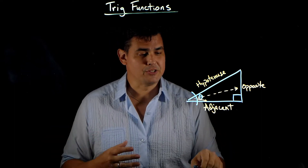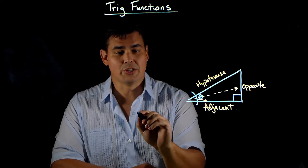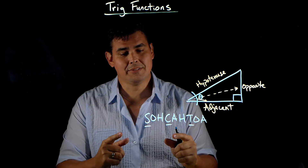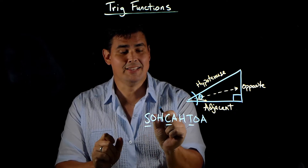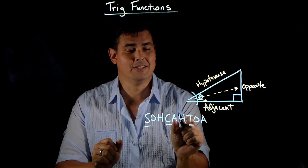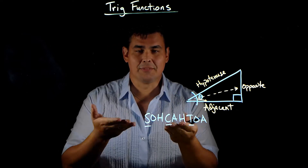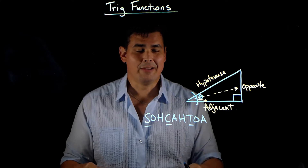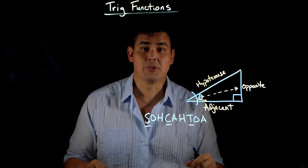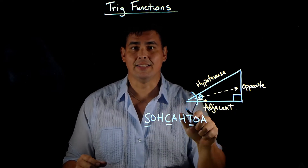The mnemonic to remember the trig functions is SOHCAHTOA. SOHCAHTOA stands for: sine is opposite over hypotenuse, cosine is adjacent over hypotenuse, tangent is opposite over adjacent. It's just a mnemonic to help you remember sine, cosine, tangent — those three trig functions.